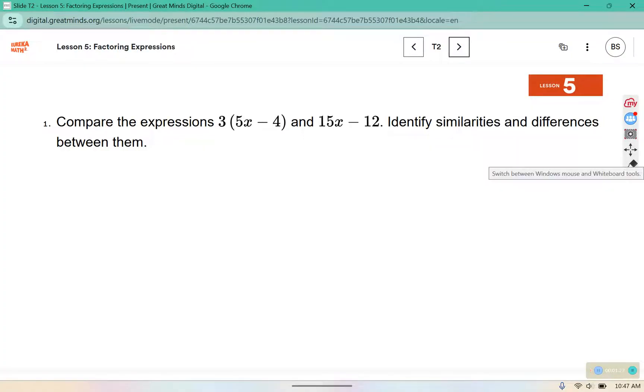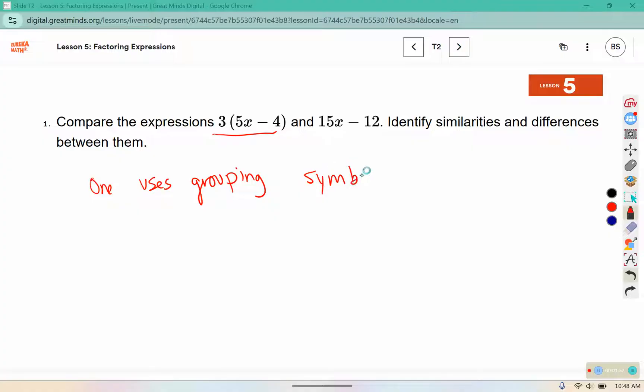Compare the expressions 3 times 5x minus 4 and 15x minus 12. Identify similarities and differences between them. So a difference that I notice is this first expression uses grouping symbols. And the second does not.